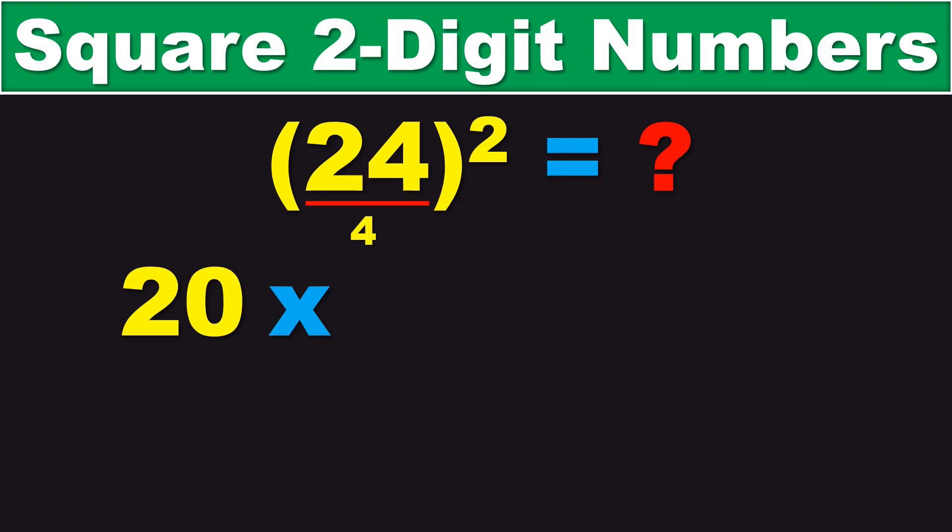And, just to reiterate, 4 comes from the difference between the original number and the nearest multiple of 10. So, 24 minus 20 is 4, and then, 24 plus 4 is 28.